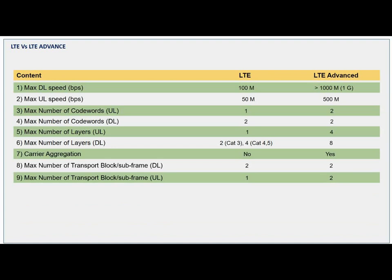The next is the transport block. A major change in uplink: in LTE we are using only one transport block per subframe, while in LTE Advanced we are using two. Even though downlink transmissions are the same, there is a big enhancement in LTE Advanced for uplink — now we can use non-contiguous data in a single DFT.